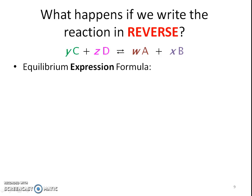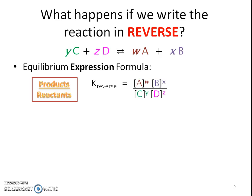What happens if we write the reaction in reverse? Well, what happens to that reaction? Now we have products over reactants still, because we're still writing an equilibrium expression. So in the reverse, we would have the AB on top and the CD on the bottom.